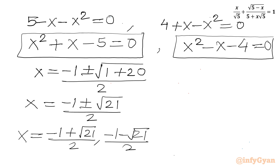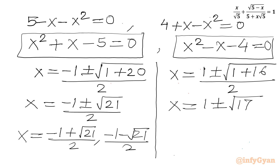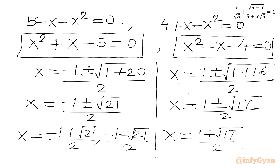Now for the second quadratic equation x squared minus x minus 4 equals 0, applying the quadratic formula with b equals minus 1: x equals 1 plus or minus root 17, over 2. This gives x equals 1 plus root 17 over 2, and x equals 1 minus root 17 over 2.